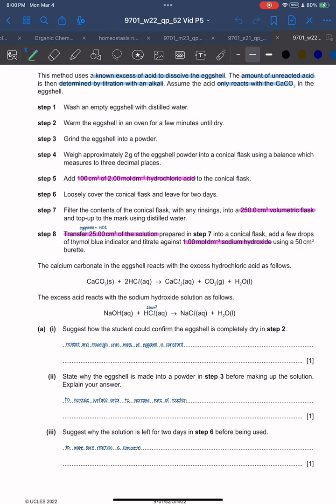The calcium carbonate in the eggshell reacts with excess hydrochloric acid. The excess acid reacts with the NaOH solution. Suggest how the student could confirm the eggshell is completely dry in step 2: reheat and reweigh until the mass of the eggshell is constant. Once the mass does not change anymore, it means all the water has evaporated.